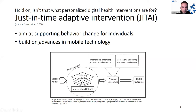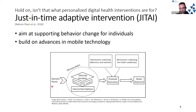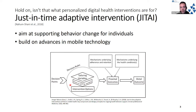JITAIs are defined as a multi-component intervention with components like decision points — points in time at which an intervention decision is made — tailoring variables, which are information concerning the individual such as internal and external values like location, intervention options (an array of treatments that can be applied at any point in time), and decision rules, which link tailoring variables and intervention options to provide the right support at the right time. Outcomes are measured as proximal outcomes — short-term, like steps 16 minutes following an intervention — and distal outcomes, the long-term outcome such as weight loss over a few months.